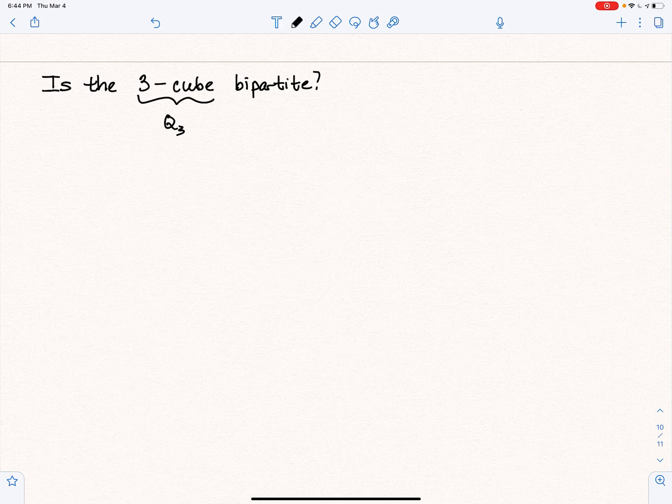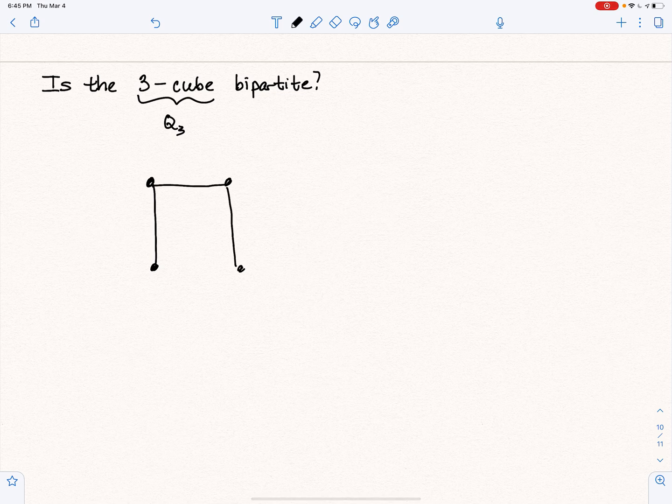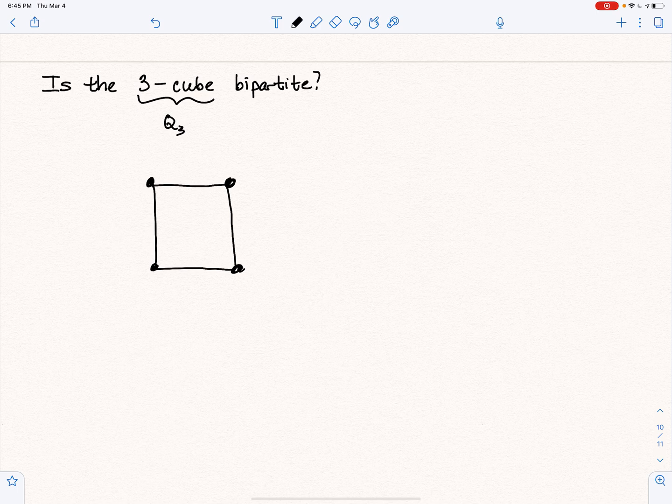So let's form the 3-cube first. Now I always start with the 2-cube, which is basically the square. And remember that the vertices are represented as binary bit strings. So in the square, it's length 2.